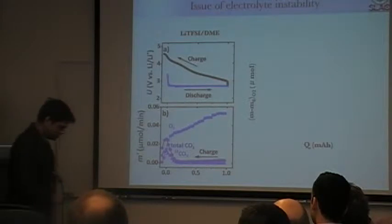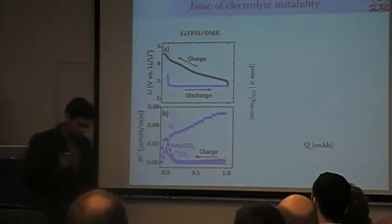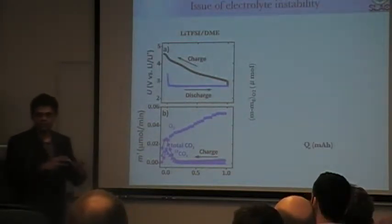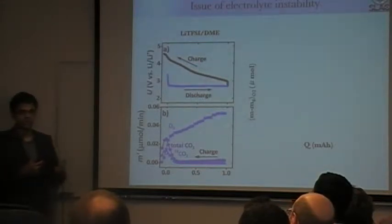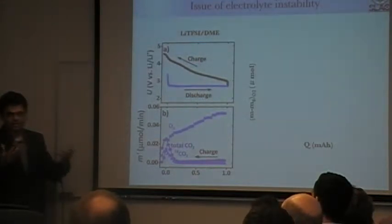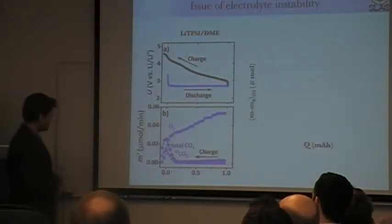And so there are two possible ways in which you can get CO2. You have carbon, classic carbon as an electrode, so you can get CO2 from there. And you have electrolyte, which has dimethyl ether, so there's some carbon there, so it could come from there.